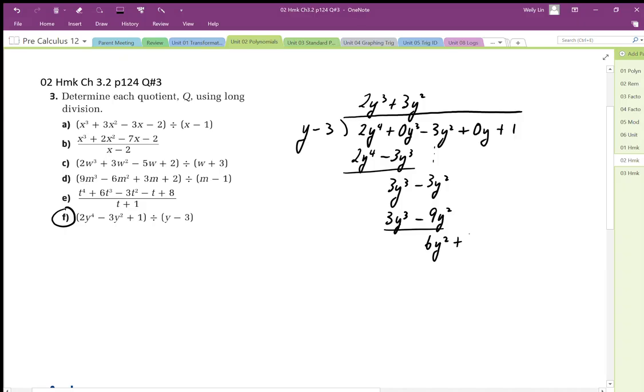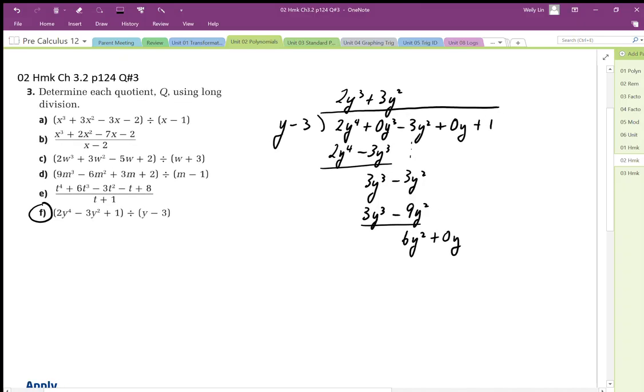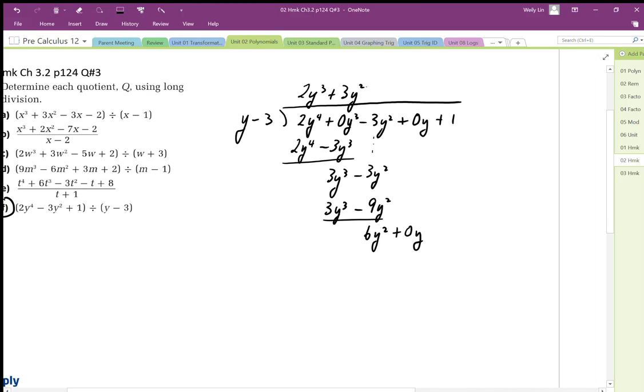Bring down that other term, we get plus 0y. So this becomes plus 6y. So we end up with 6y squared, minus 18y squared. We get 18y squared.